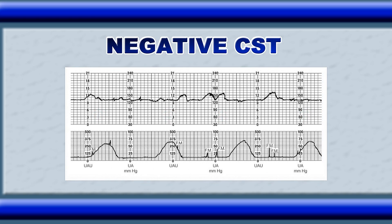Here we can see a negative contraction stress test result. Whenever there is a uterine contraction the fetal heart rate also declines, but it does not stay depressed for a long time. Whenever the uterine contraction fades, it automatically comes back to the baseline. We can see 4 uterine contractions responding to a fetal heart rate — it declines, but when the contraction fades it returns to the baseline.